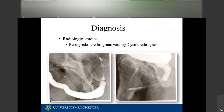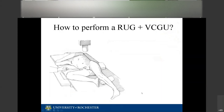On the retrograde urethrogram, contrast goes retrograde; the voiding cystourethrogram shows contrast going antegrade. To perform a retrograde urethrogram: lay the patient supine, then roll them onto one hip at 45 degrees with the dependent thigh flexed, to get an oblique view of the full length of the urethra. You must ensure the urethra does not overlap, as that gives a false impression of stricture location.